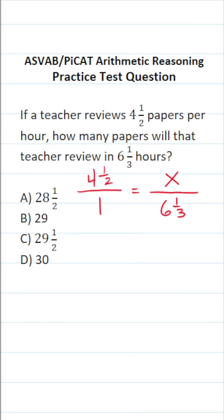We solve proportions via cross multiplication. This becomes one times X, which is just X equals four and one half times six and one third. Let's go ahead and work this out to get our answer.